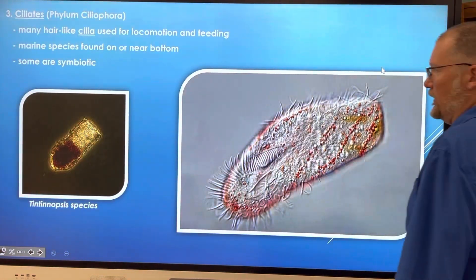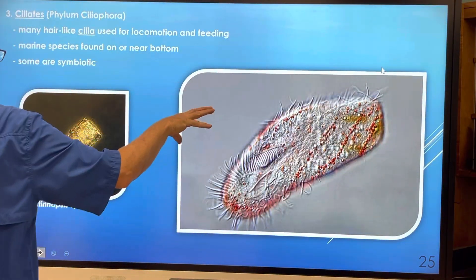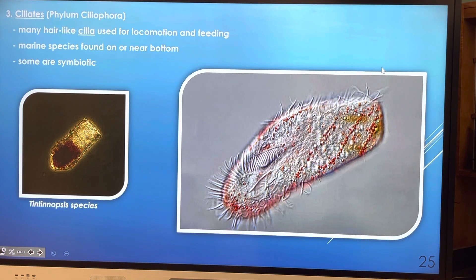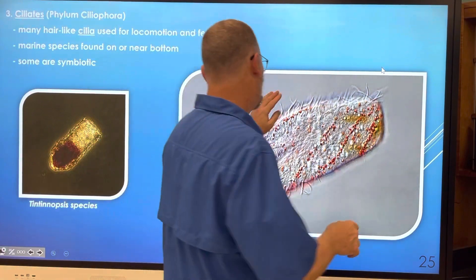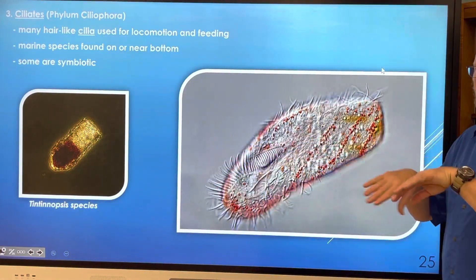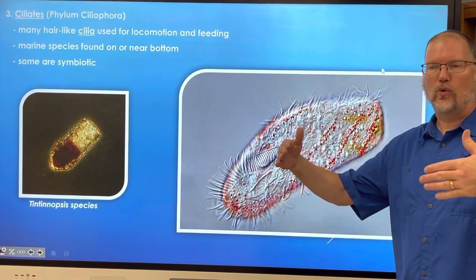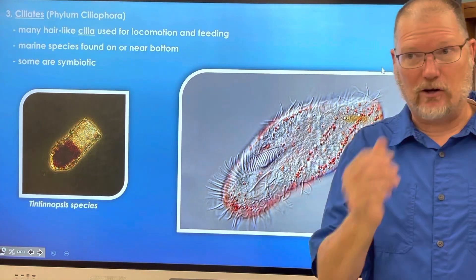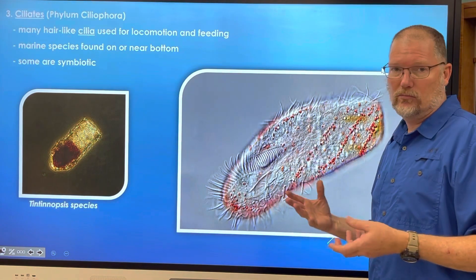Then we have the ciliates. Many hair-like cilia are used to move around and feed. Many marine species are found on or near the bottom of the ocean, and some of them are symbiotic, living with other organisms. These little cilia beat like little oars — like a whole bunch of oars in one of those old Roman or Greek boats — and they move around. You may know what a paramecium is; ciliates are very similar.